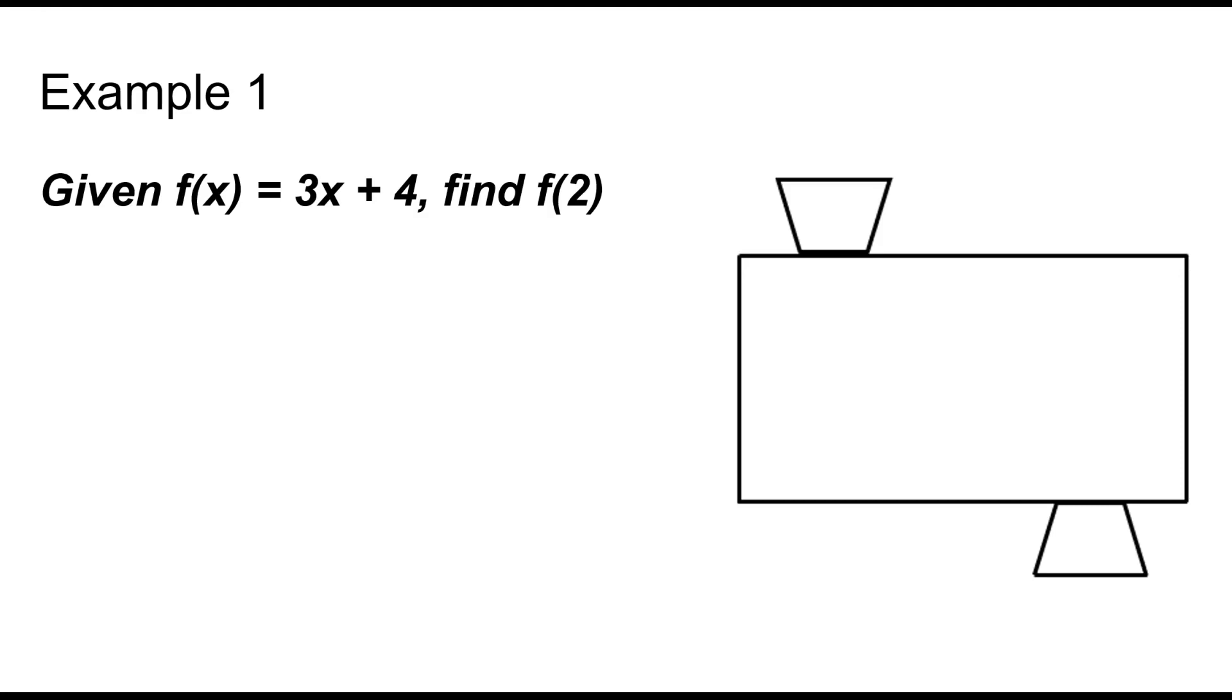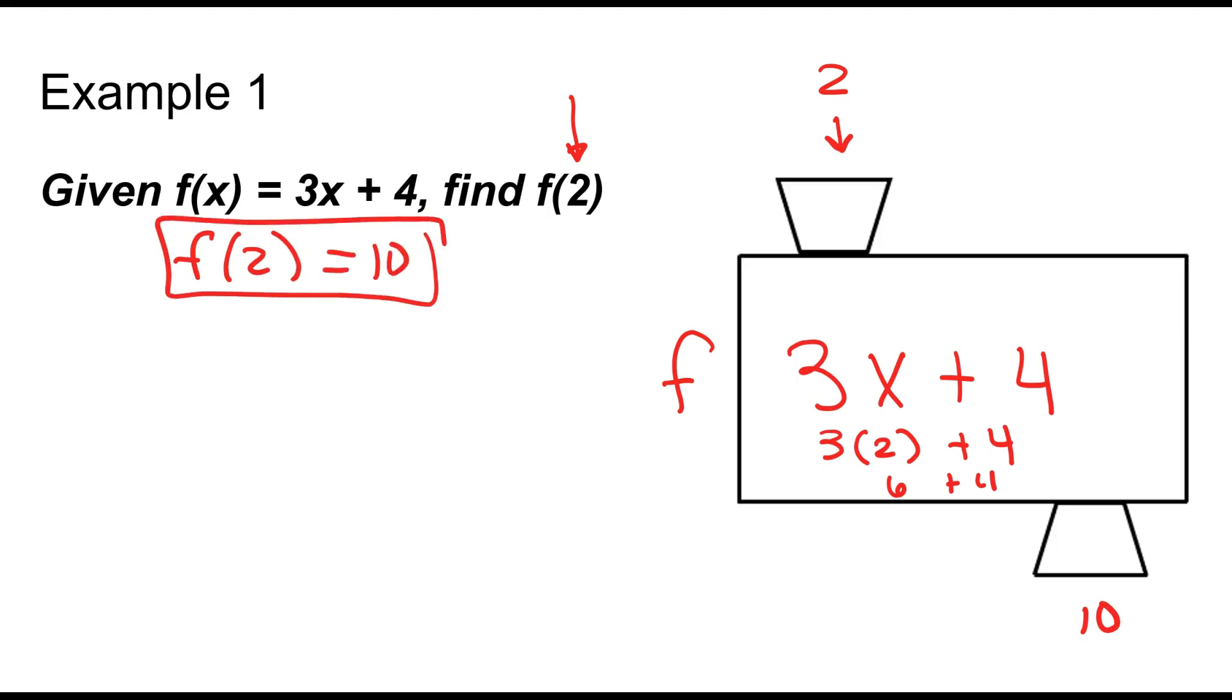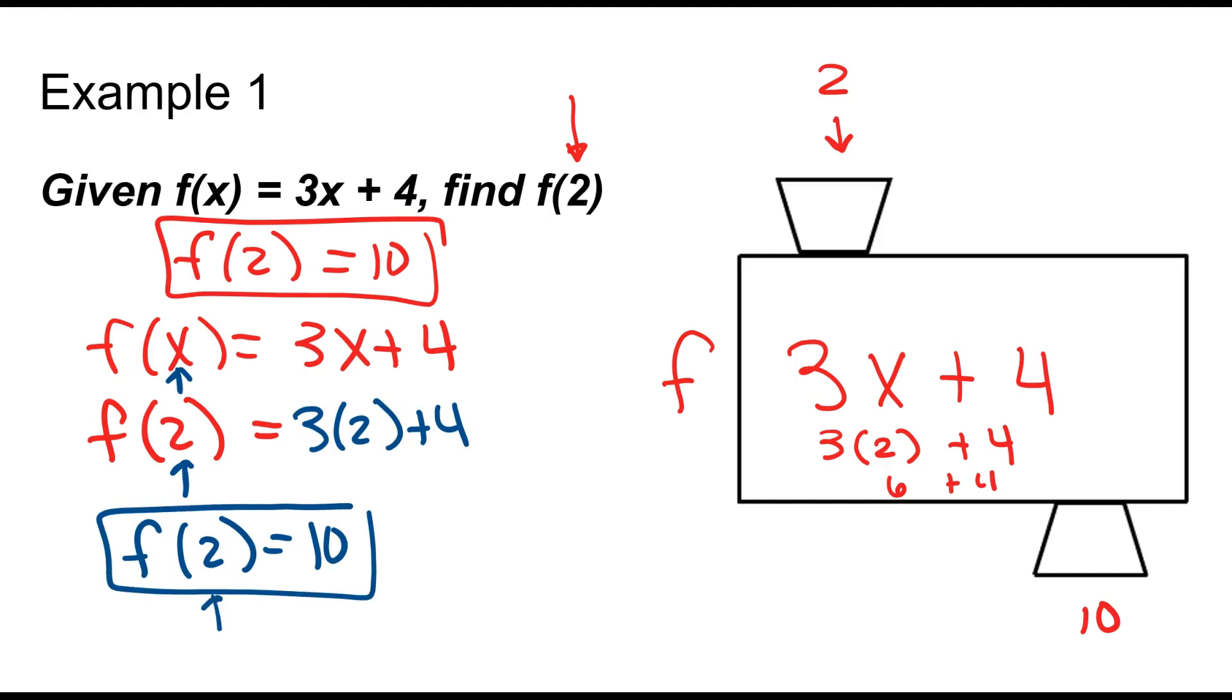Given f of x equals 3x plus 4, find f of 2. I'm going to solve this with the machine and without the machine. So I've got my function f. The function is 3x plus 4, and the number that I'm inputting is 2. So what's happening inside is it's going to be 3 times 2 plus 4. I'm going to get out 10. So f of 2 is equal to 10. Now let's try it without the machine. If we have f of x is equal to 3x plus 4, and I'm trying to find f of 2, that means input the 2 where the x's were. So that's going to be 3 times 2 plus 4. f of 2 is going to be equal to 10. You want to make sure you include both the input and the output in your answer by using proper notation.